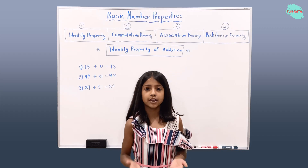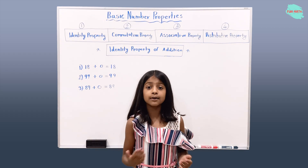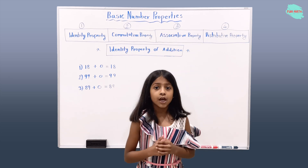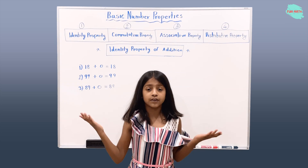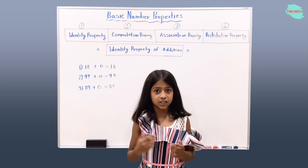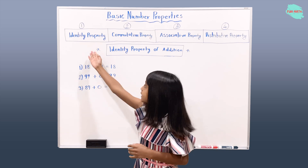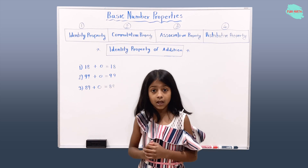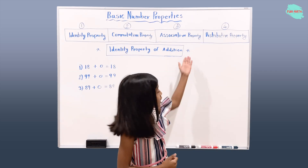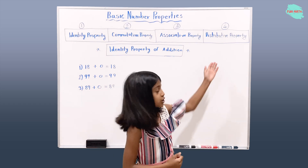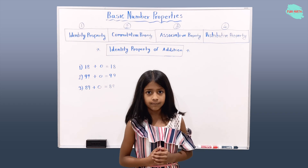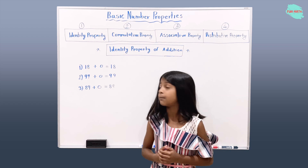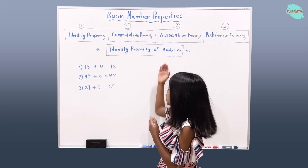Hi, welcome to Fun Map. Today we're going to be talking about basic number properties. Here we have four different types of properties, which are identity property, commutative property, associative property, and distributive property. In this video, we will only be talking about the identity property of addition.